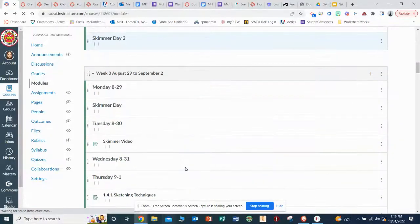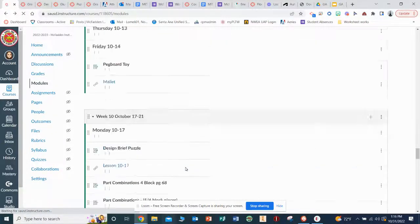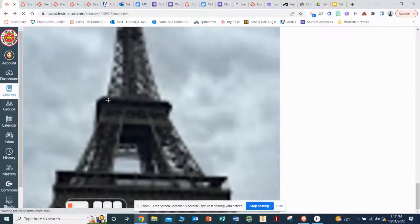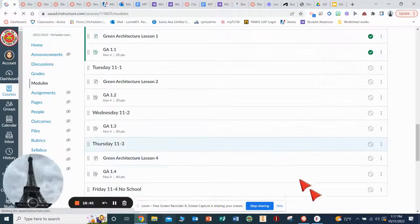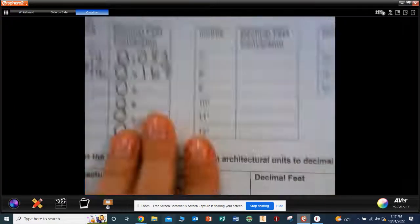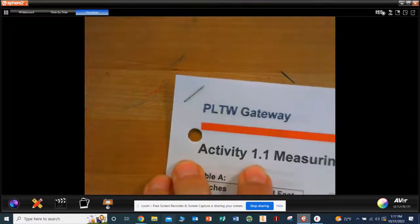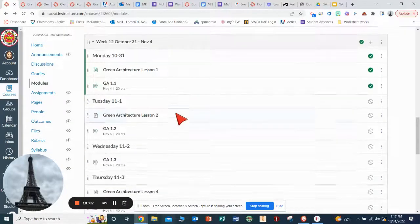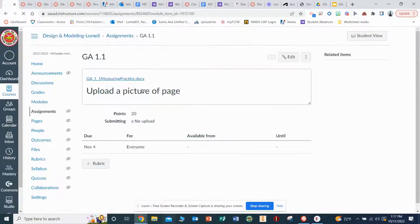If you go down to week 12, GA 1.1, because if I go here, this is activity 1.1, right? So I'm going to go into your modules. On week 12, green architecture 1.1.